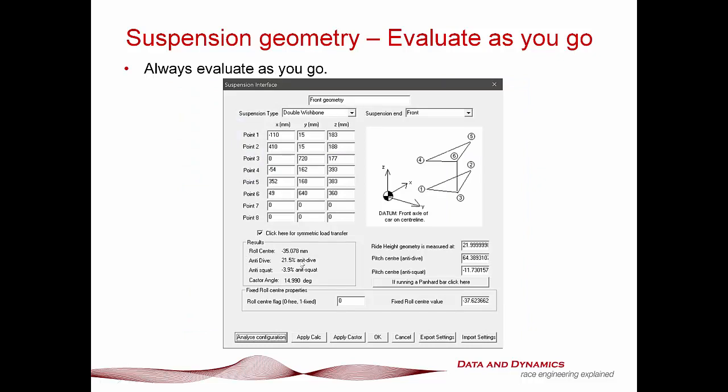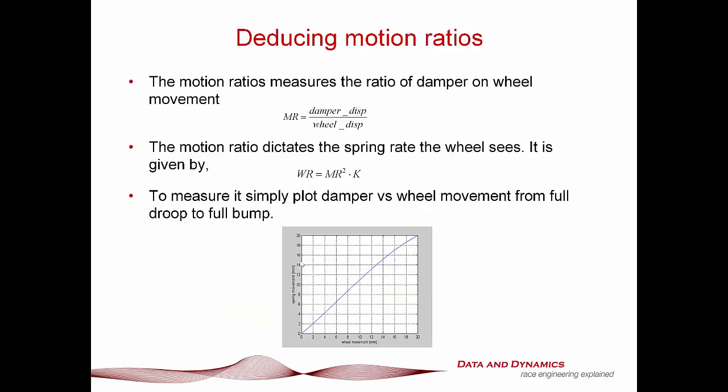Deducing motion ratios: this is probably the most overlooked bit of measuring up a race car, yet it's one of the most critical things. Here's why: motion ratio measures the ratio of damper to wheel displacement, and so what that gives us is a wheel rate which is motion ratio squared times the spring rate. What we want to do is plot this from full bump to full droop.